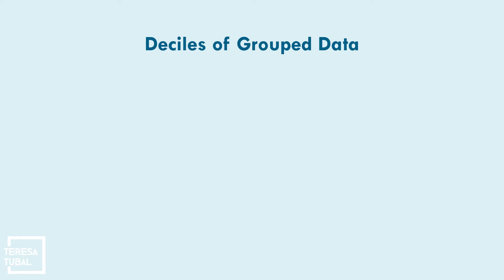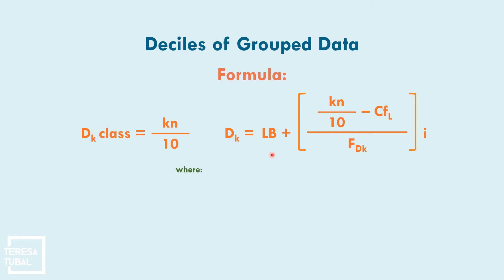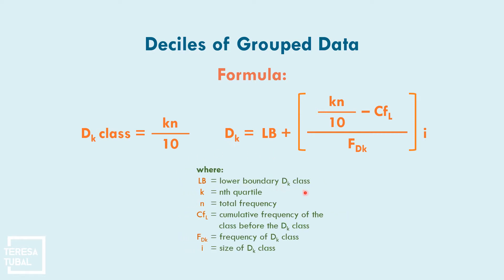The formula for the decile D sub K is: D_k = LB + [(k×N/10 − CF) / F_Dk] × i, where LB is the lower class boundary, N is the total frequency, CF is the cumulative frequency of the class before the D sub K class, F_Dk is the frequency of the D sub K class, and i is the class interval size. To identify the D sub K class, use the formula: k × N / 10.